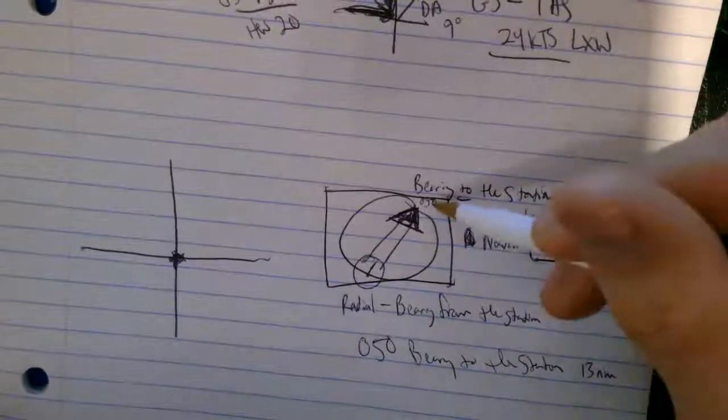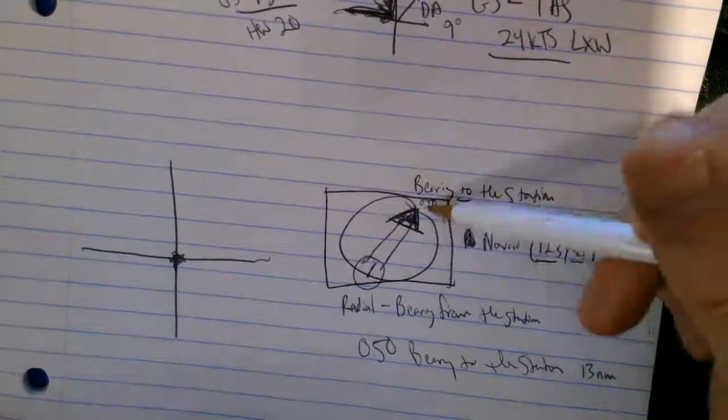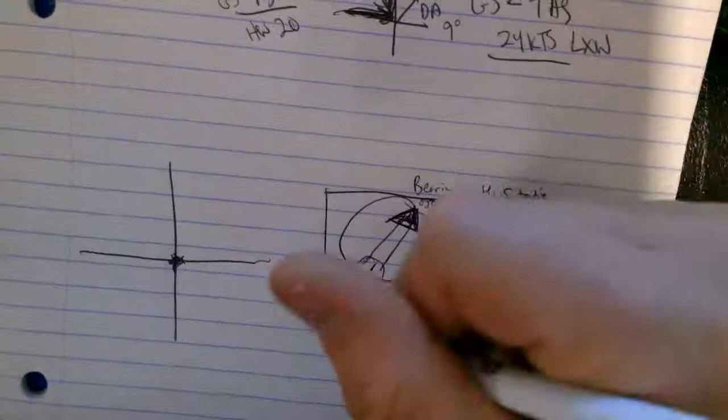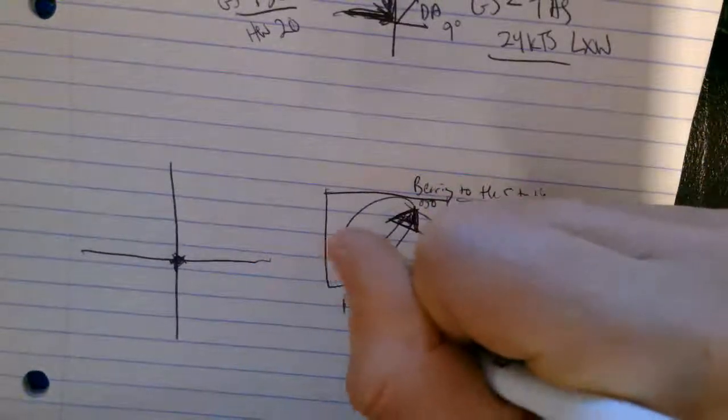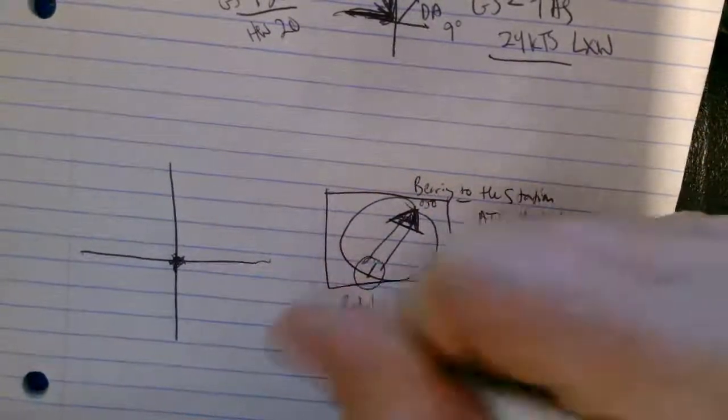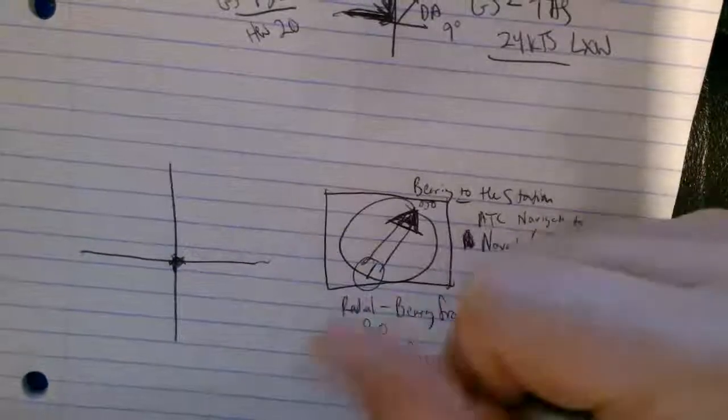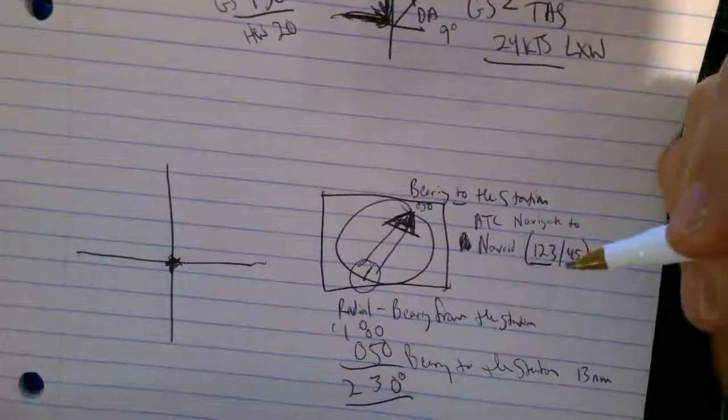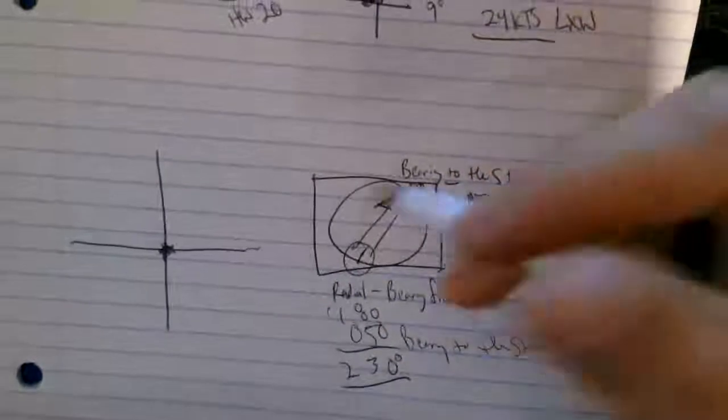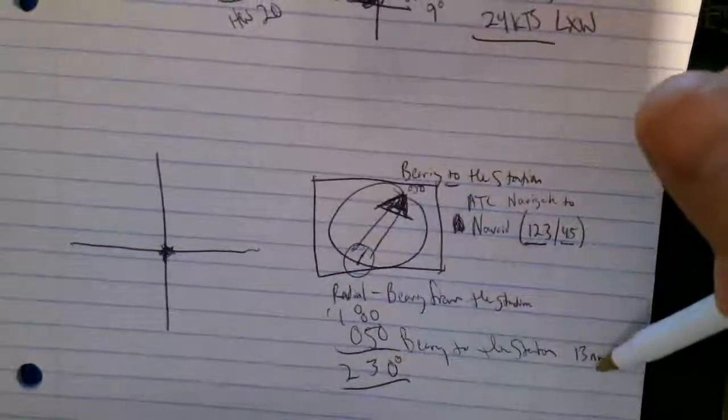So if that's the case, then you've got to take the reciprocal value. So add 180 degrees to 150. And now you're going to be plotting 230. All right? So 230 at 13 nautical miles.